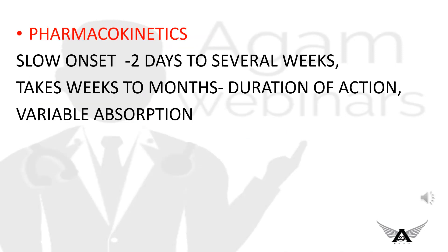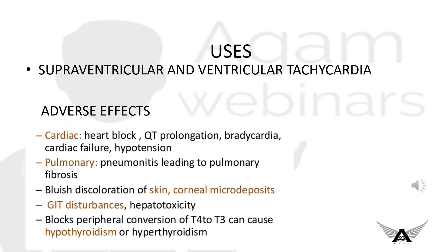Pharmacokinetics of amiodarone: it has variable absorption of 35 to 65%, low onset of two days to several weeks, and duration of action of weeks to months. It can be used for both supraventricular and ventricular tachycardia.